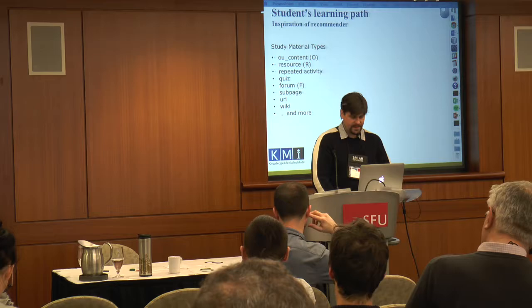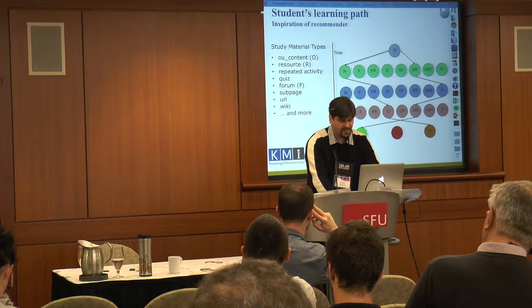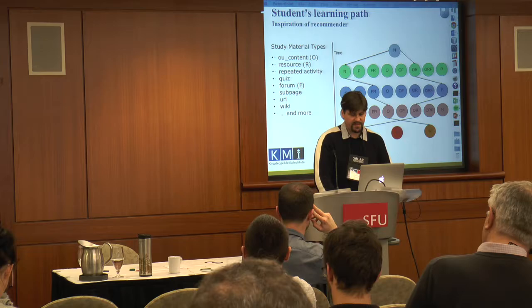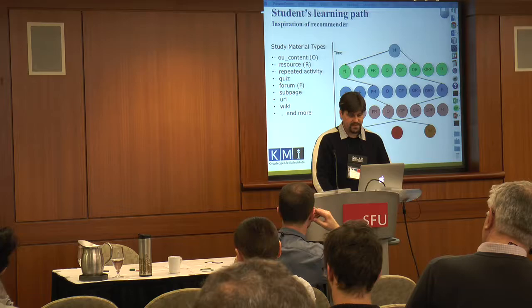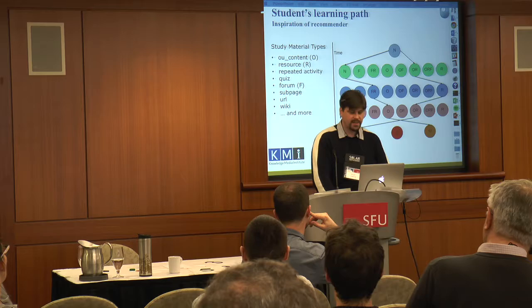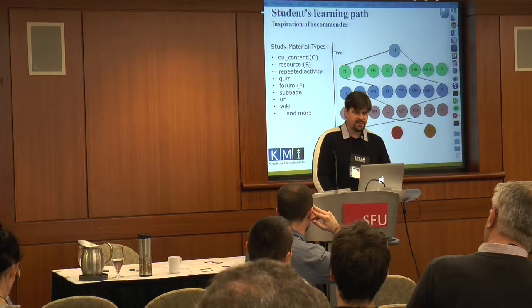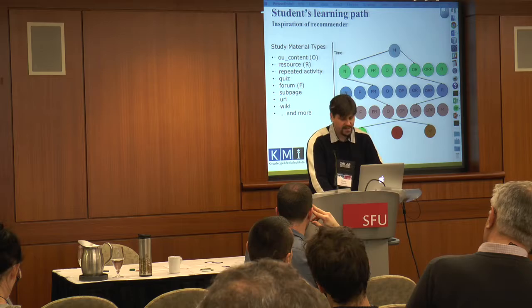The second issue is connected with our previous research, where we found out that there are learned paths over time across particular study activities, study materials, and study material types. What is important is that the path of unsuccessful students — failed students — is different from the path of successful students. And of course, there is no one path for the successful students; there are many paths, and we need to aggregate this information into one representation.